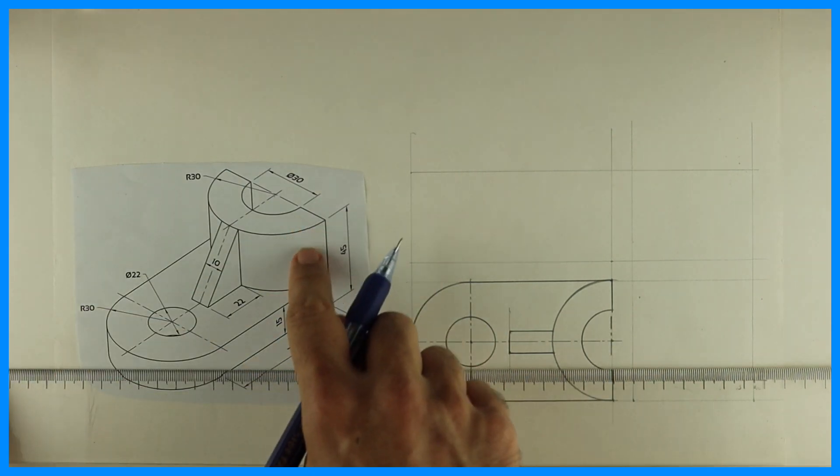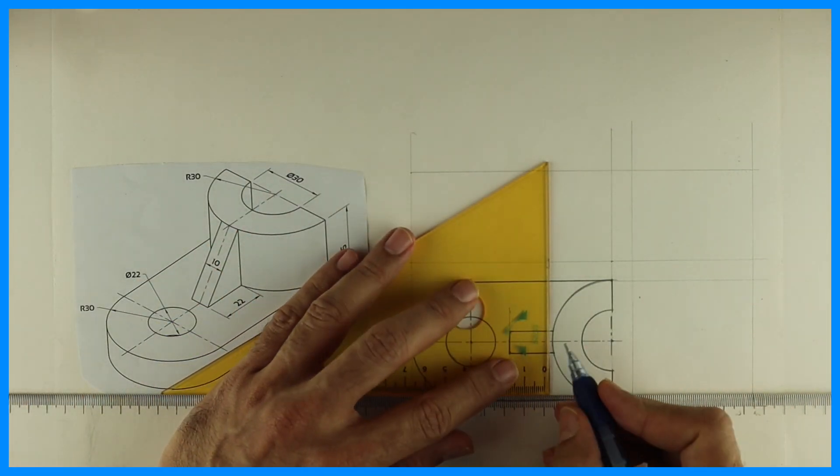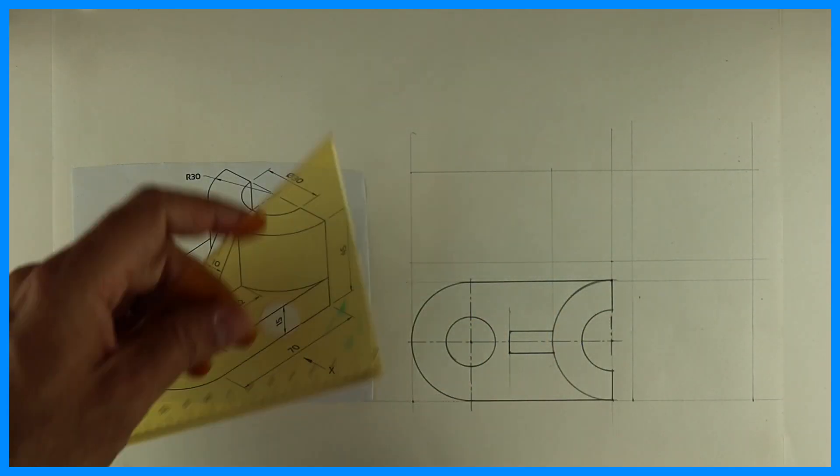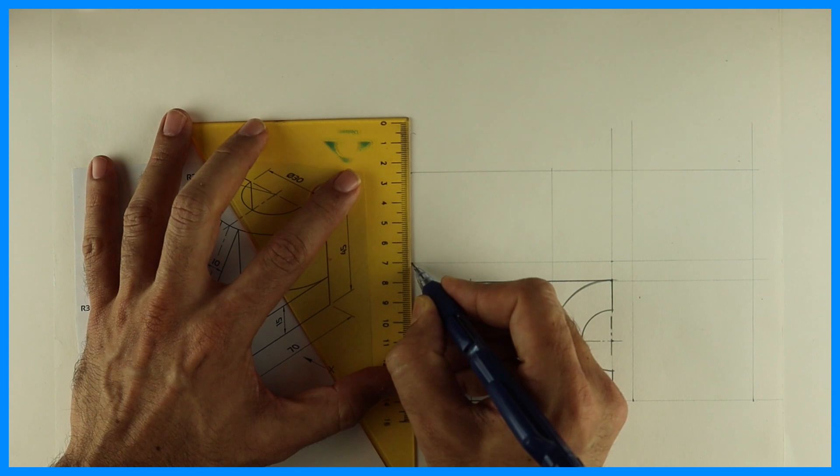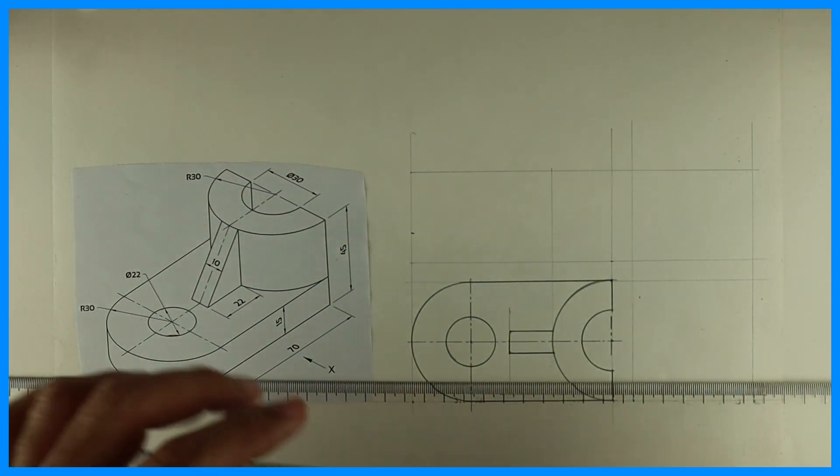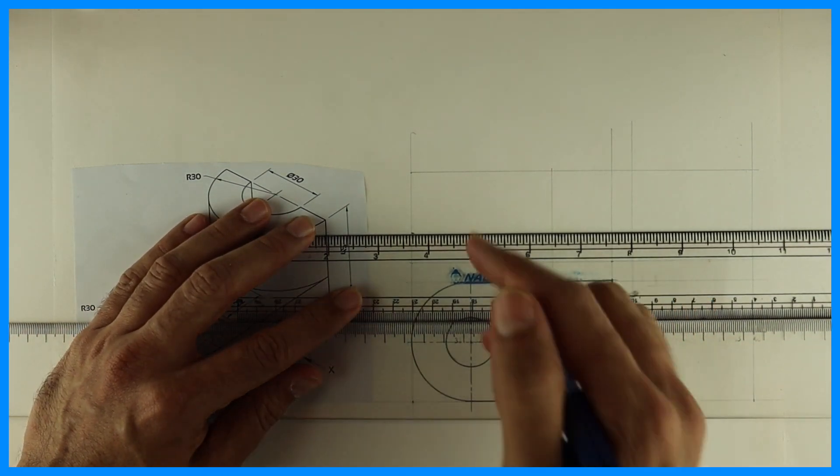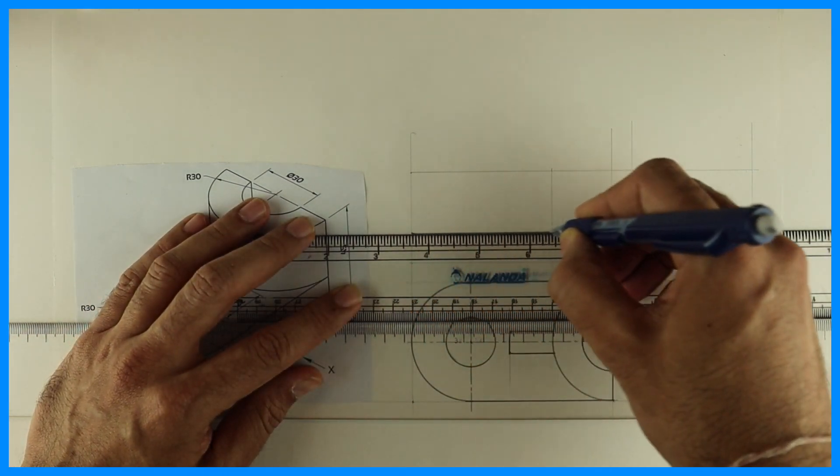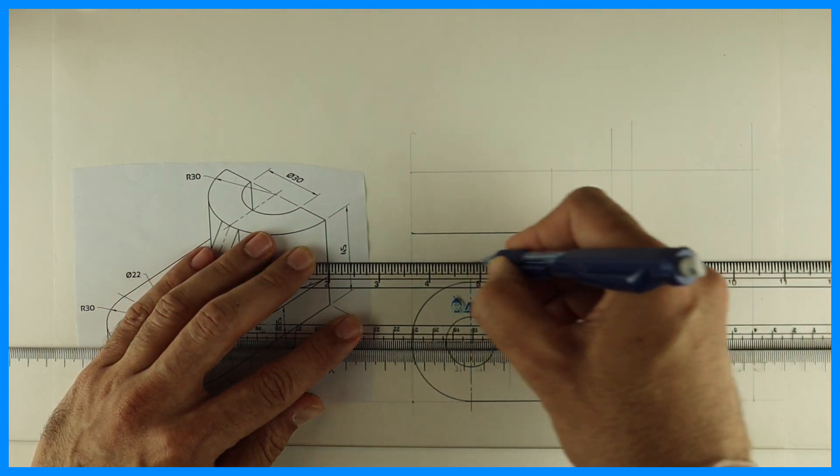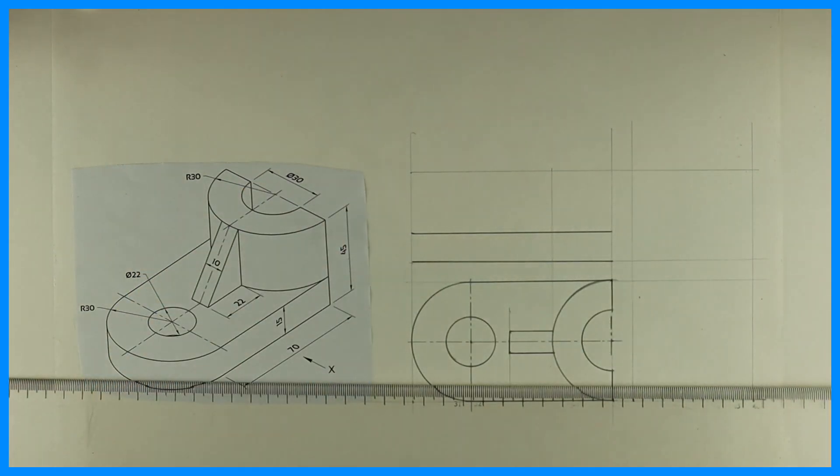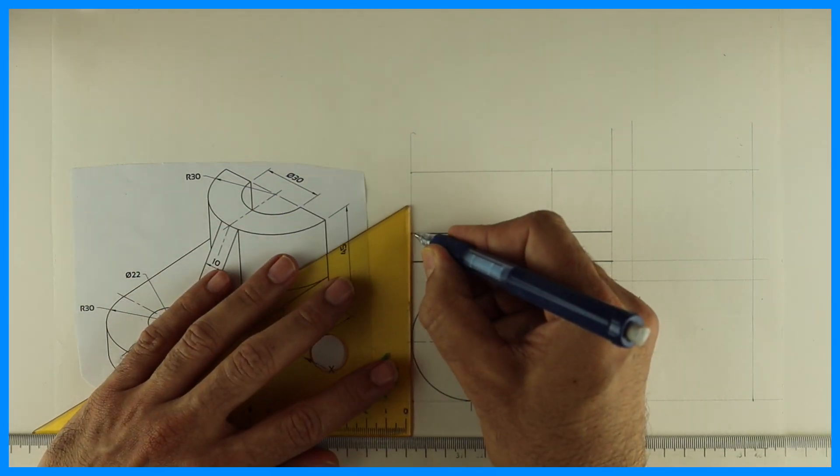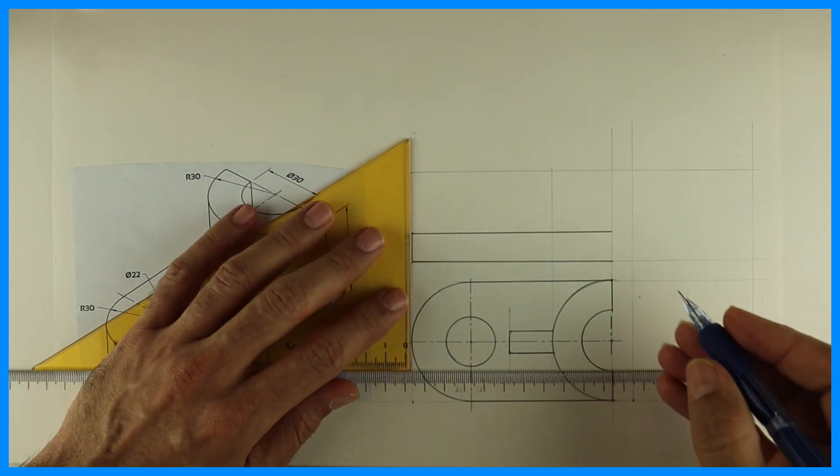Now we'll draw front view. See this. This circle, it will appear as a rectangle. This part, 15, so you go up by 15. This will be dark. This will be also dark, so we'll have 15mm rectangle down.